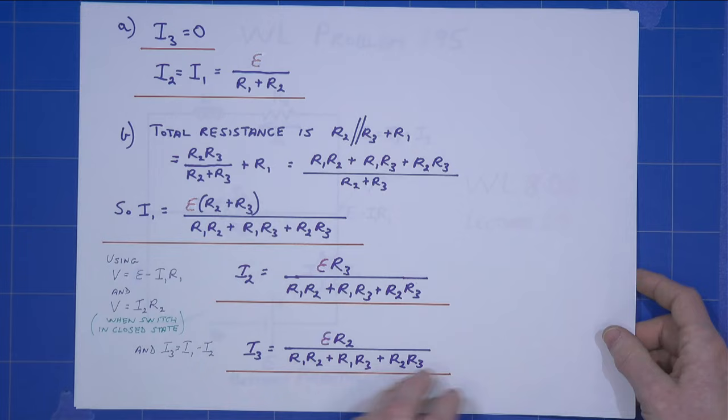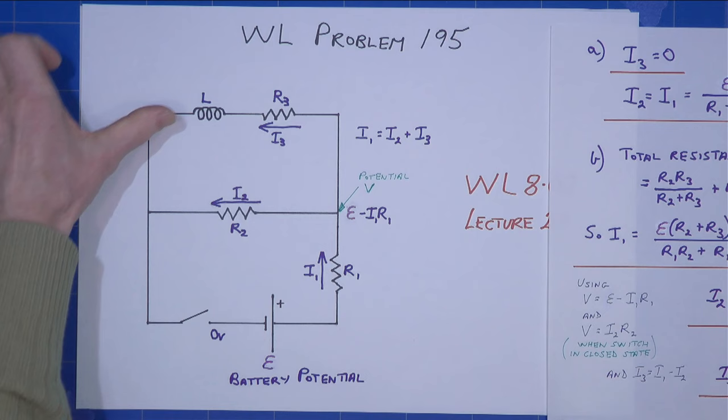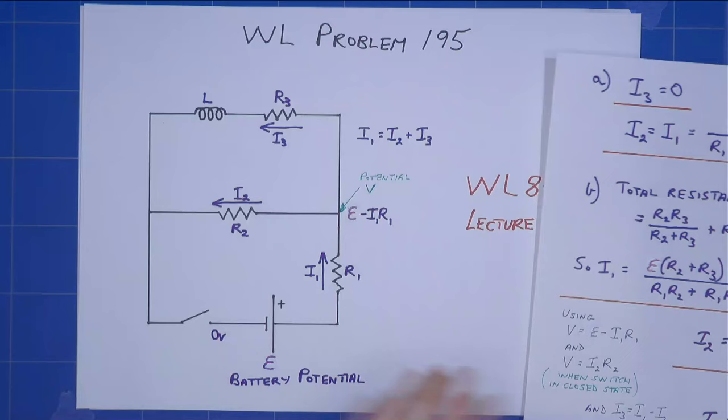OK, that's part A and part B. For part C, we now open the circuit, open the switch again, and as I've said before, the current here cannot instantaneously change.